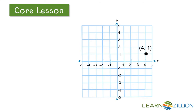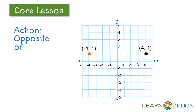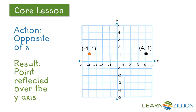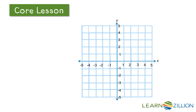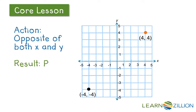Starting with that same point again, suppose we want to reflect over the y axis. The y coordinate stays the same, but we take the opposite of the x coordinate, and we move it to the second quadrant. If we want to move it to the opposite quadrant, we're going to take the opposite of both the x and y.